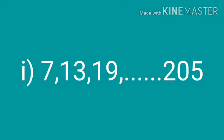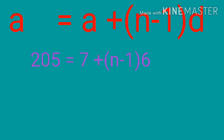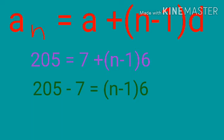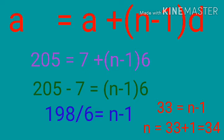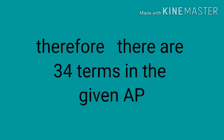The last term 205 will be taken as AN. So AN is 205, A is 7, D equal 13 minus 7 that is equal 6. Value of N we need to find. Substituting in the equation: AN equal A plus N minus 1 into D, so 205 equals 7 plus N minus 1 into 6. Transposing 7 to LHS: 205 minus 7 equal N minus 1 into 6, so 198 equal N minus 1 into 6. Then 198 by 6 equal N minus 1, so 33 equal N minus 1, giving N equal 34. So here 34 terms are there.